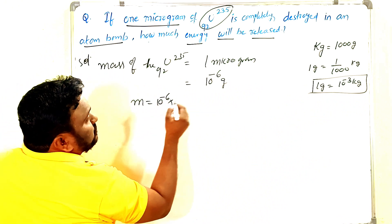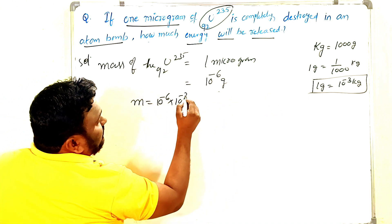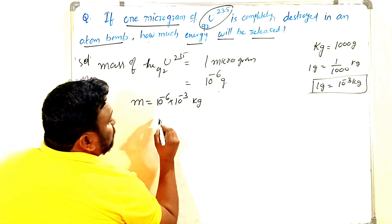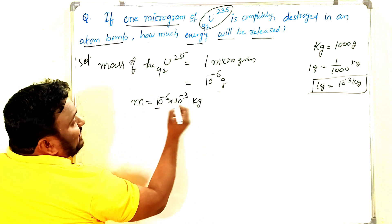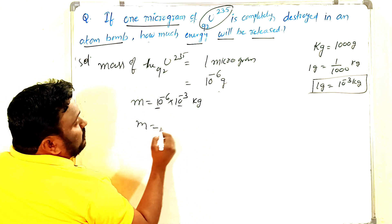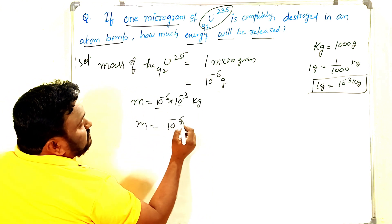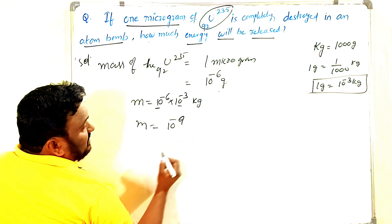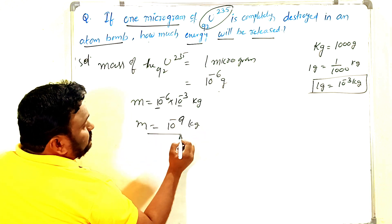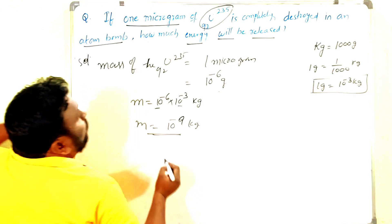So 10 power of minus six into grams means 10 power of minus three kg. When bases are equal we have to add the exponents, then m is equal to 10 power of minus six plus minus three, which means minus nine. So m equals 10 power of minus nine kg.